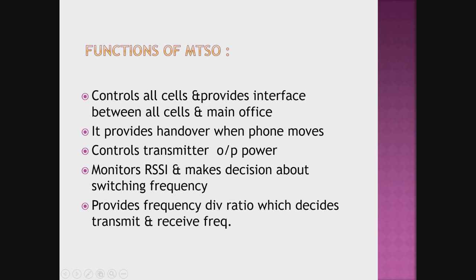Let us see the functions of MTSO — the Mobile Telephone Switching Office. It controls all cells and provides the connection between all cells and the main office. It provides handover when a phone moves from one cell to another cell. It controls the transmitter output power. It monitors RSSI — Received Signal Strength Indicator — and makes decisions about switching frequency. It provides a frequency division ratio which decides the transmit and receive frequency of the mobile station.